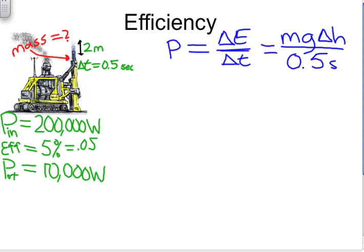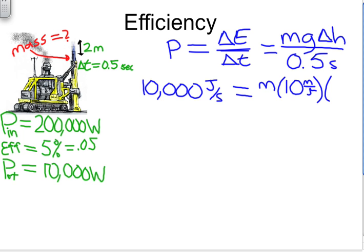We also now know the power that it has to move the rod. That's 10,000 watts. And recall that a watt is simply a joule per second. And we know a lot of information about the pile driver. We don't know its mass, but we do know the acceleration of gravity is 10 meters per second squared, multiplied by 2 meters, and all divided by 0.5 seconds.